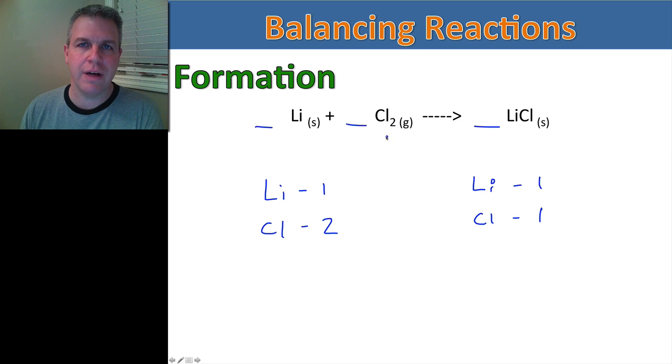Remember that any metal is going to be monoatomic, and any halogen is going to be diatomic. So that's why chlorine exists in two. And then, of course, our ionic compound, we just have to make sure that the ions are balanced.